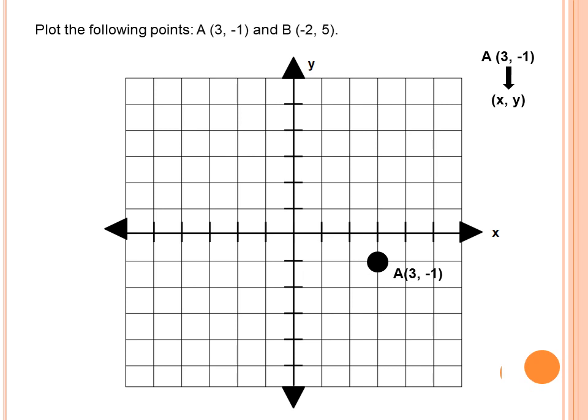We need to remember to always look at the x-axis for the x-coordinate first before going to the y-axis for the y-coordinate. Now for point B — the process is the same. Starting from the origin, the x-coordinate is negative 2. Negative numbers are to the left of 0, so that is 2 units to the left of 0.